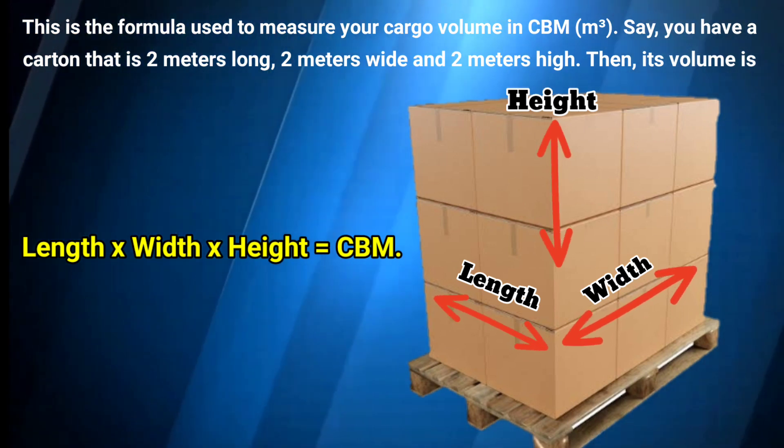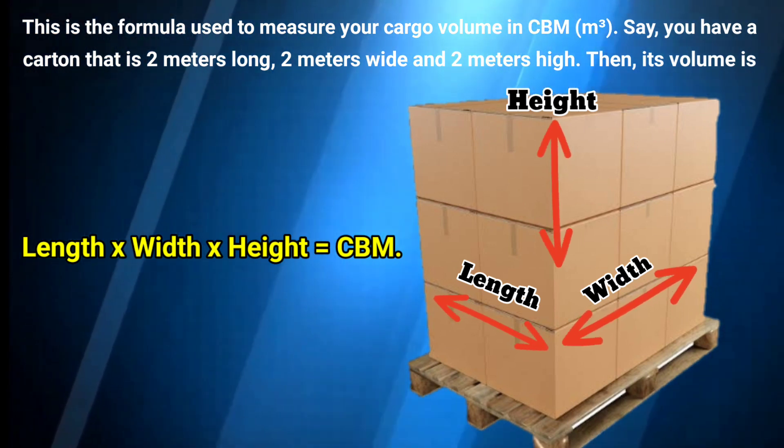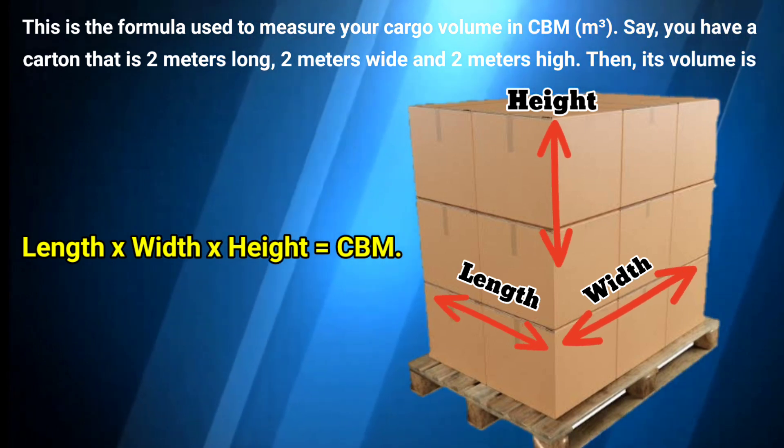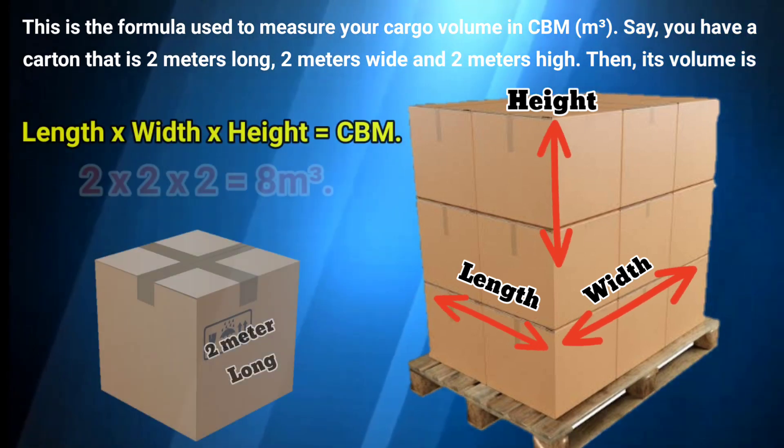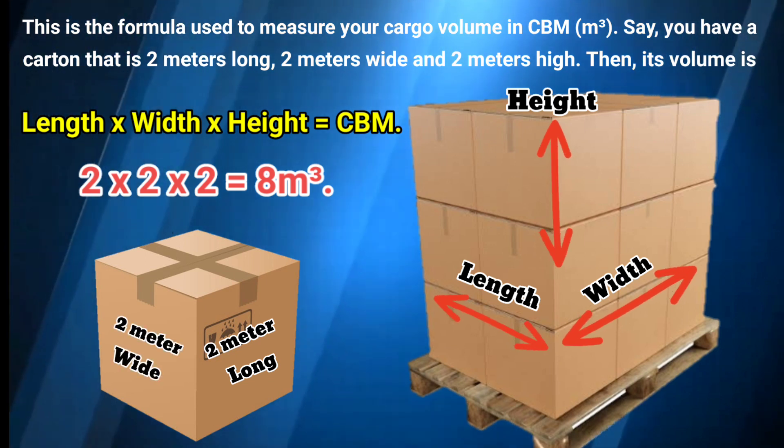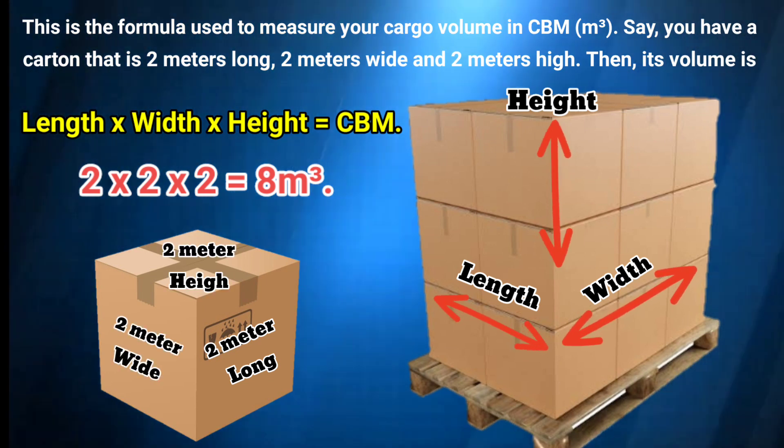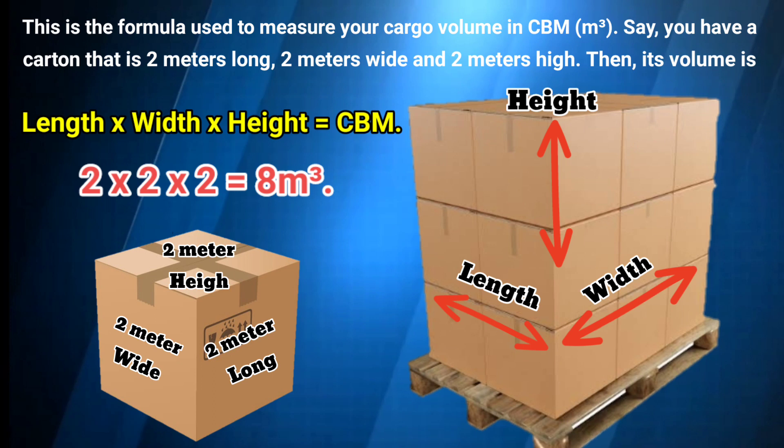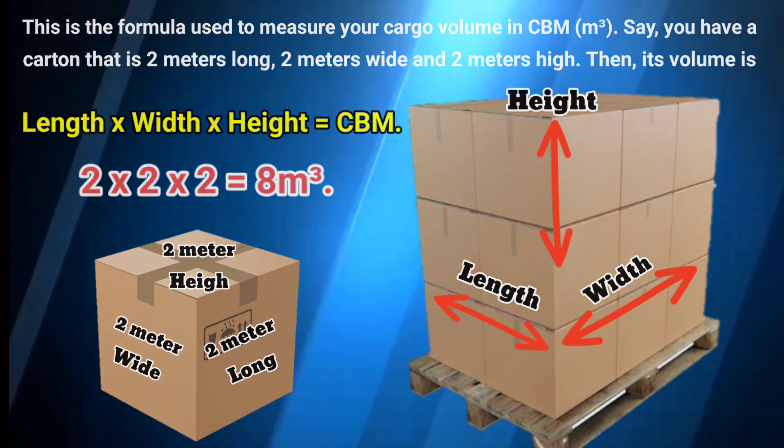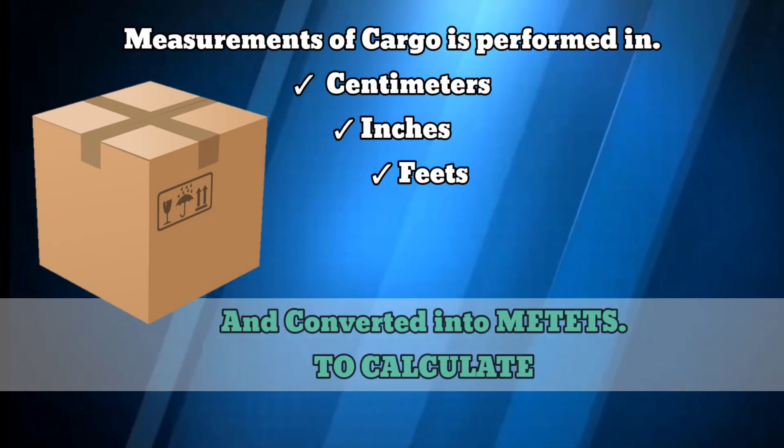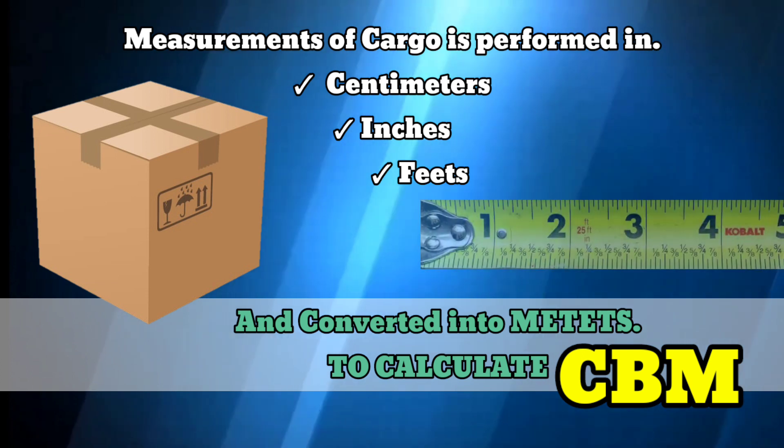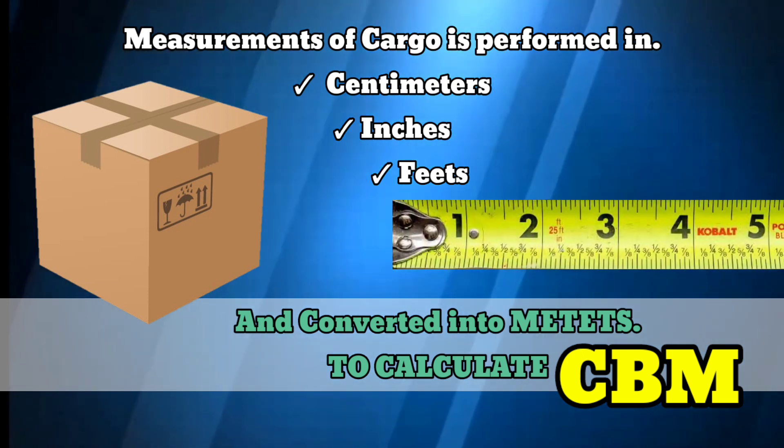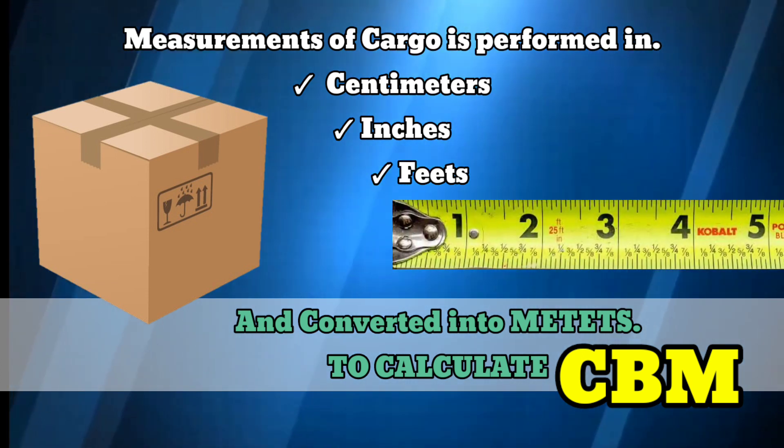This is the formula used to measure your cargo volume in CBM, cubic meters. Say you have a carton that is two meters long, two meters wide, and two meters high. Then its volume is two by two by two, eight cubic meters. Measurement of cargo boxes is performed in centimeters, inches, and feet, and converted into meters to calculate CBM.